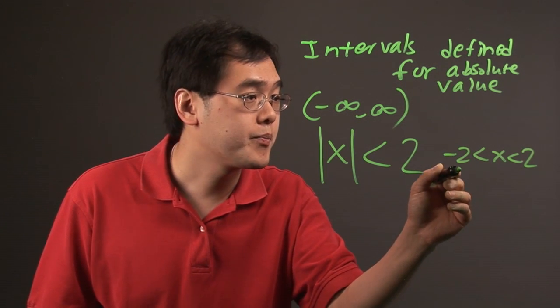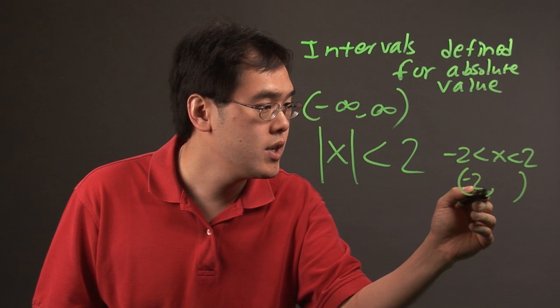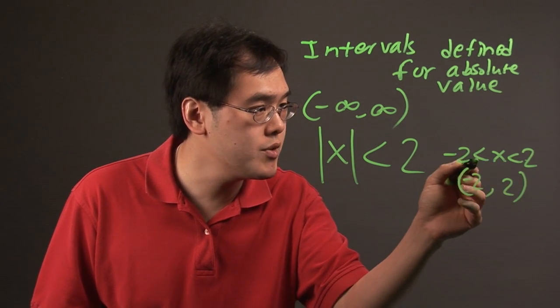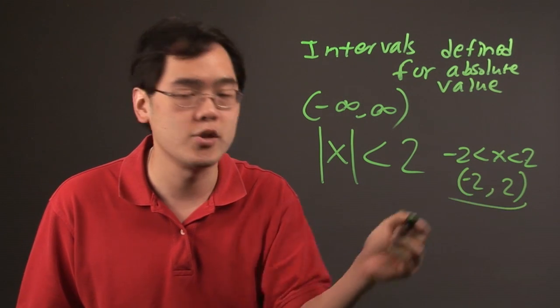As an interval, you want to think about this as negative 2 to 2, and because the numbers are non-inclusive, because there's no equal sign, that's where the parentheses comes in. So that's an example of an absolute value interval.